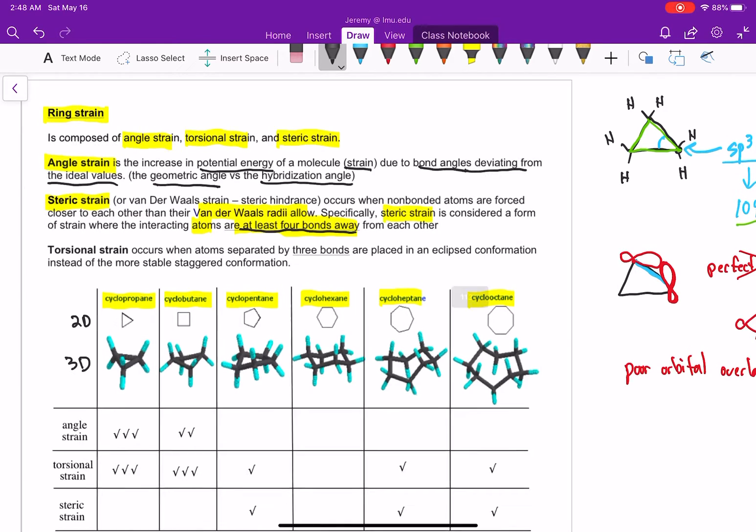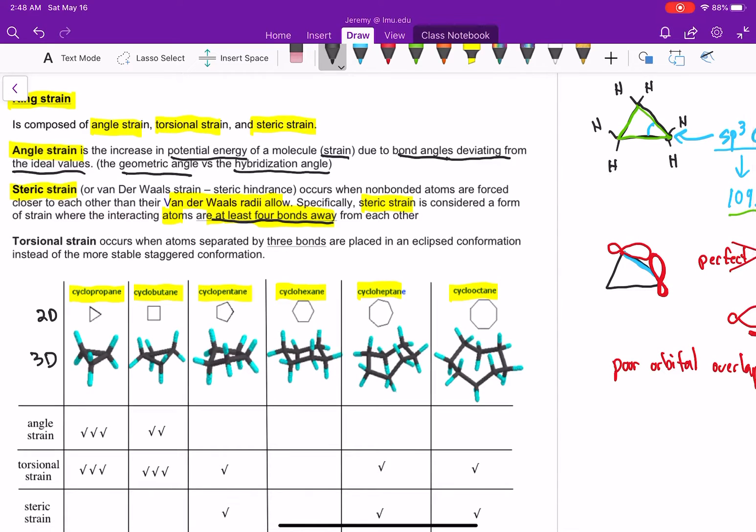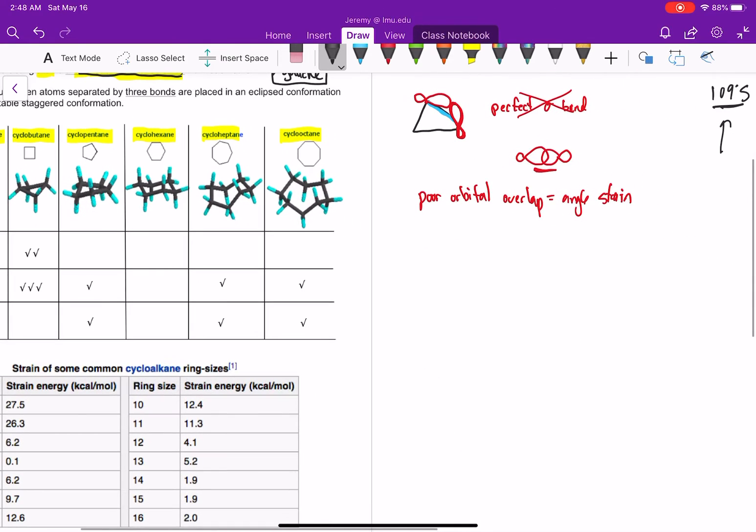And we've actually already talked about steric strain. That's what we have when we have a gauche interaction. A gauche interaction is a perfect example of what steric strain is. So if I draw a Newman projection, and here I have a methyl, and here I draw an ethyl, this is a gauche interaction.